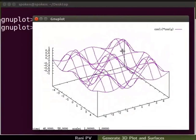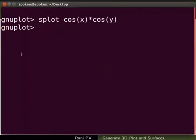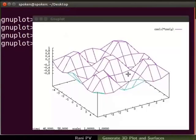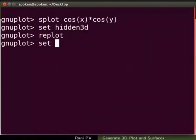Let's change some of the properties of the surface. We will colour both sides of the surface differently. The required command for this is set hidden3D. Enter the command replot to see the changed colours. Notice the hidden surface is coloured green and the top surface is purple.